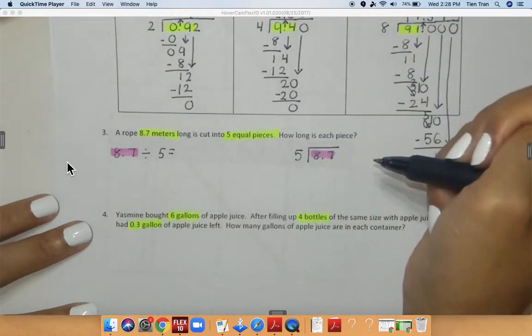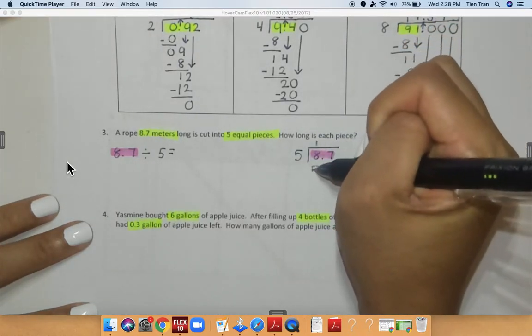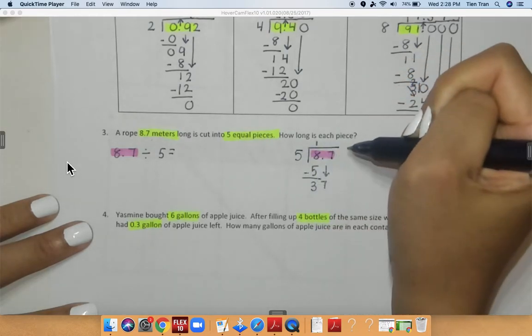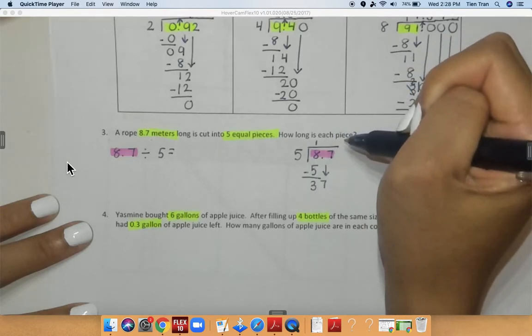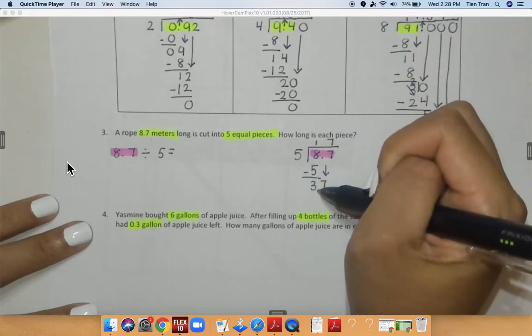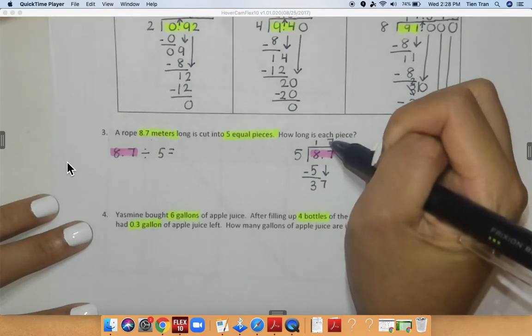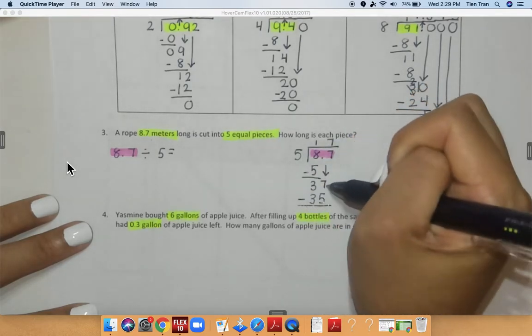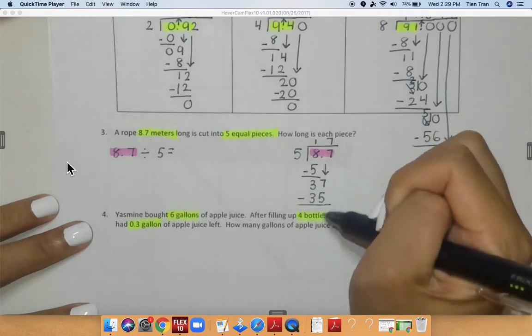How many times can five go into eight? One time. Eight minus five is equal to three. Bring down my seven. Five can go into 37 how many times? It can go into 37 seven times. Five times seven is equal to 35. Subtract. 37 minus 35 is equal to two.